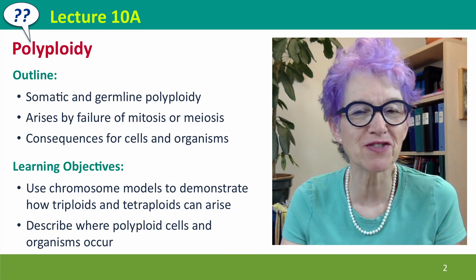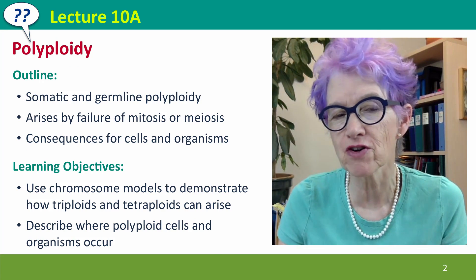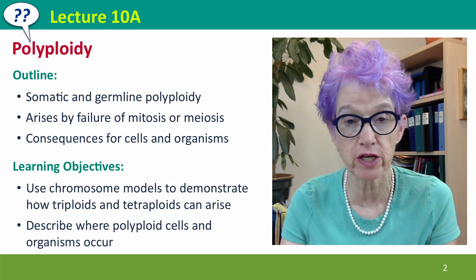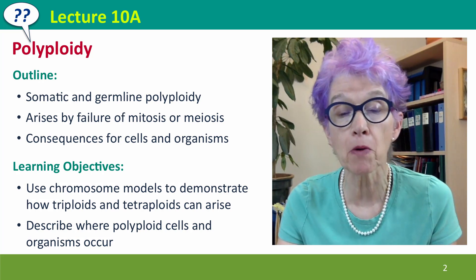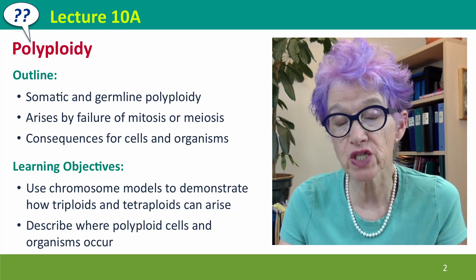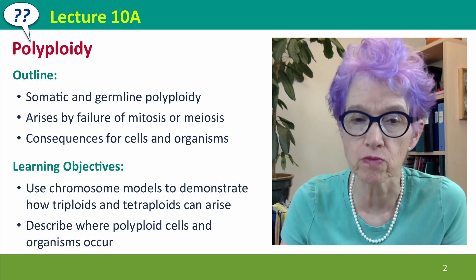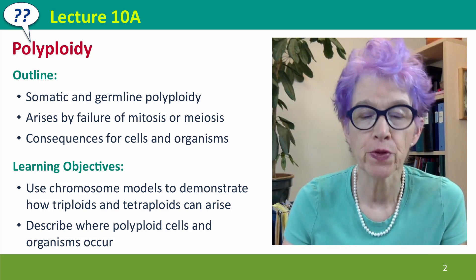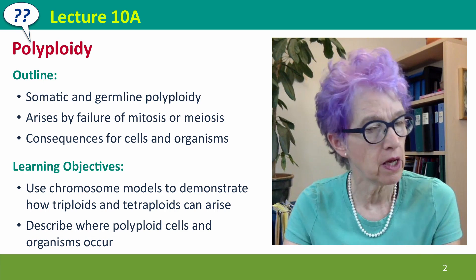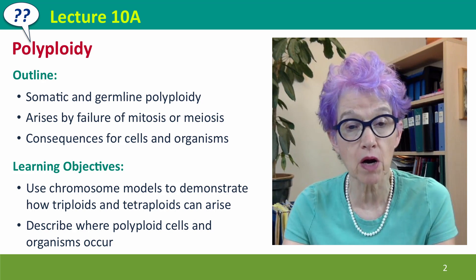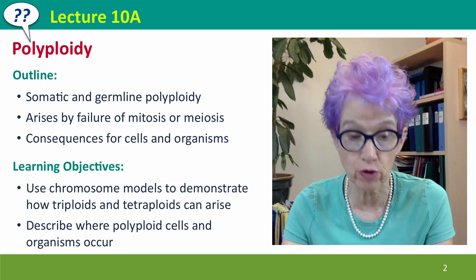Hi, everyone. Welcome back to Useful Genetics. This is lecture 10a, the first of our lectures on how chromosomes can change. In this lecture, we're going to talk specifically about polyploidy, which is increases in the number of complete sets of chromosomes in a cell. We'll talk about somatic polyploidy and germline polyploidy, about the different ways that it can arise, and about the consequences for cells and for organisms.